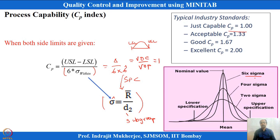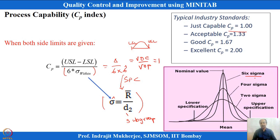CP of 1.33 corresponds to about 4 sigma, and CP of 1.67 corresponds to about 5 sigma. We can link CP values with sigma levels of a process, and MINITAB gives you options to do that. However, there is another more correct way to define and link sigma levels, which we will see.